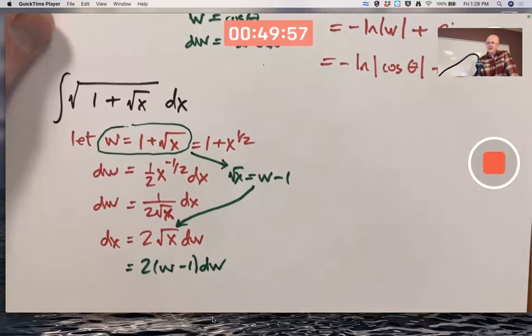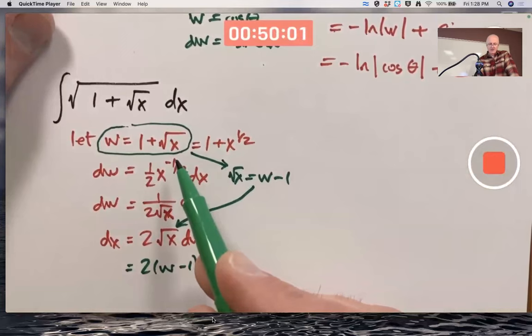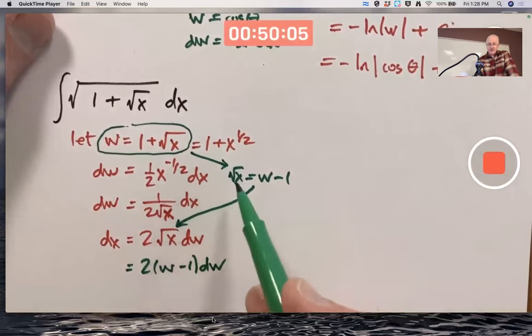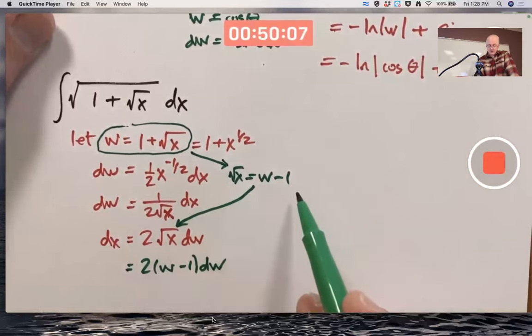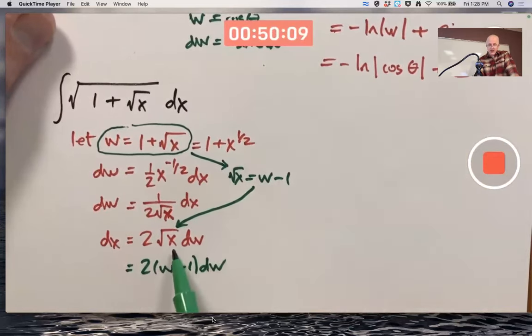Got that? That does work, right? w, by definition, is 1 plus square root of x. Subtract 1. That means square root of x is w minus 1. There's a square root of x. Replace it.